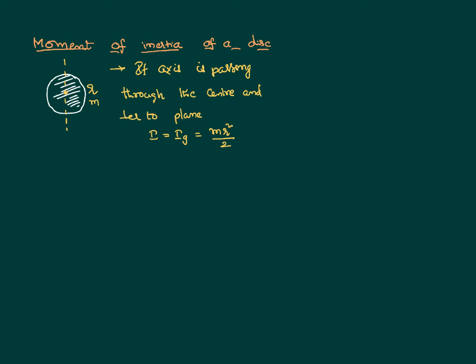Taking this value for granted, now let us consider a new scenario: the same circular disc of mass M and radius R, but the axis is not passing through the center. Instead it passes through the tangent of the disc and is perpendicular to the plane. We are interested in calculating the moment of inertia about this tangential axis. Rather than repeating integration, we can use the parallel axis theorem. We just said I_G = MR²/2, and the distance between the two parallel axes is the radius R.